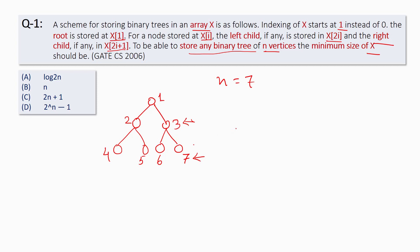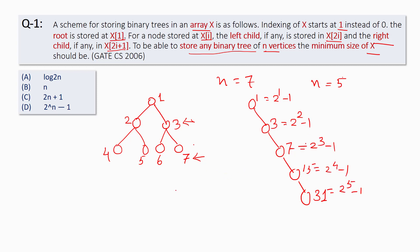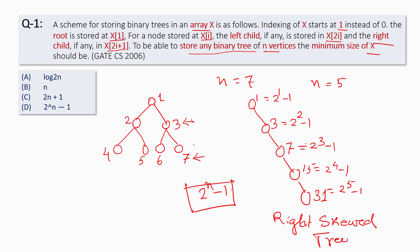Now consider a right-skewed binary tree — that case requires the maximum amount of space. Taking n equal to 5, all nodes are right children. The locations are 1, 3, 7, 15, and 31. We can express these as 2^1 - 1, 2^2 - 1, and so on. In general, the number of locations needed for a right-skewed tree is 2^n - 1.